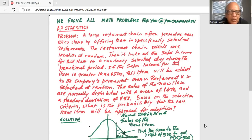If the sales income for the item is greater than $500, this item will be added to the company's permanent menu. Restaurant X is selected at random. The sales of the new item are normally distributed with a mean of 470 and a standard deviation of 53. Based on the selection criteria, what is the probability that the new item will be approved for adoption?